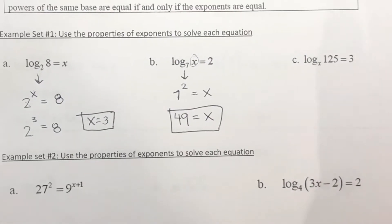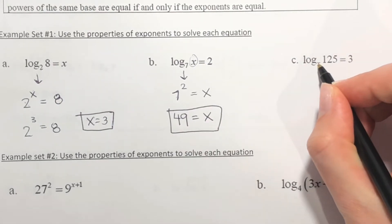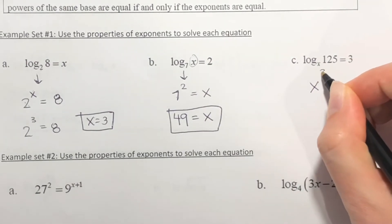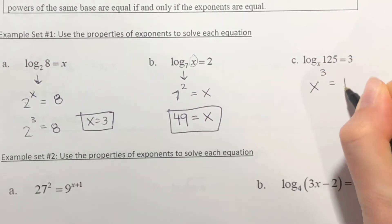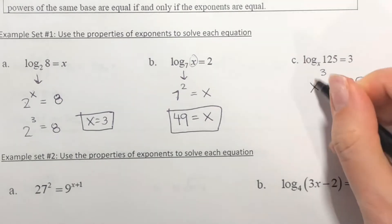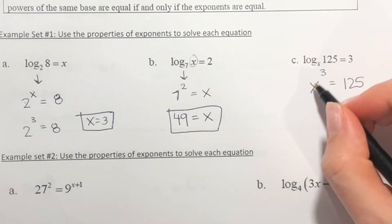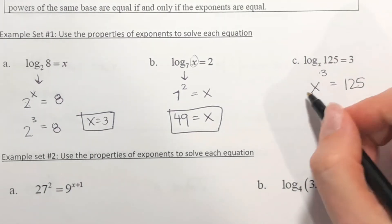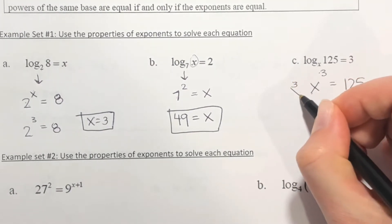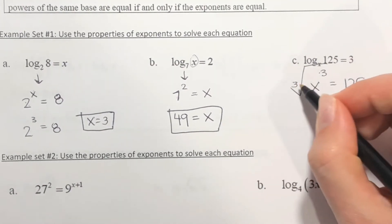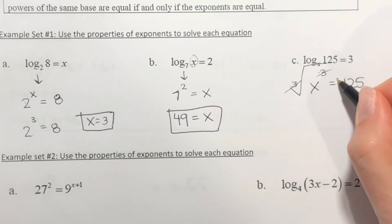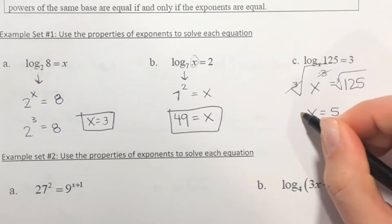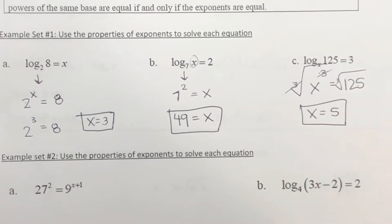On this one, x is the base. Switching to exponential form, 3 becomes the exponent and it equals 125. You need to find what number cubed equals 125 — that's 5. If you can't do it in your head, you can take the cube root of 125 to get x equals 5.